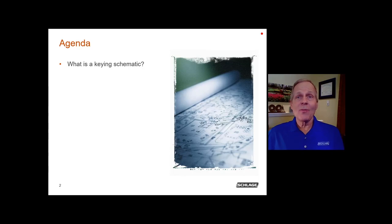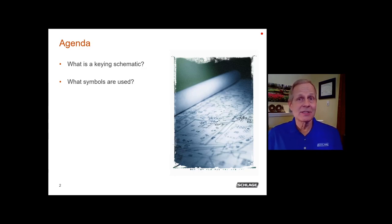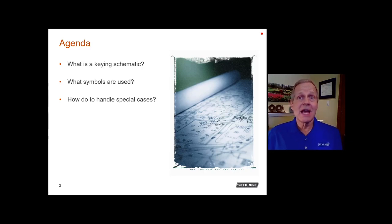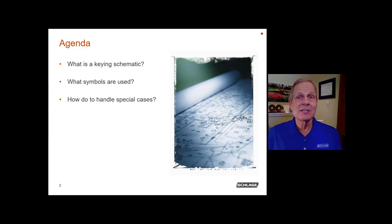We're going to be talking about what exactly is a keying schematic, and we'll look at a variety of different types so you get an idea of how they are labeled and laid out. We'll discuss key symbols — a series of letters or numbers used to label the key schematic and the keys themselves. We'll also cover some special situations, such as a cylinder operated only by the master key, or a key operated by the grand master but not a building master.